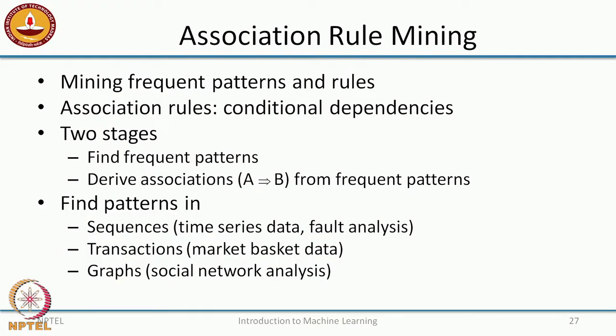In association rule mining we are interested in finding frequent patterns that occur in the input data, and then looking at conditional dependencies among these patterns. For example, if A and B occur together often, I could say: if A happens then B will happen. Suppose customers are coming to your shop and whenever customer A visits, customer B also tags along — the next time you find customer A in the shop, with very high confidence you could say that B is also somewhere in the shop. These are the kinds of rules we are looking at: association rules which are conditional dependencies.